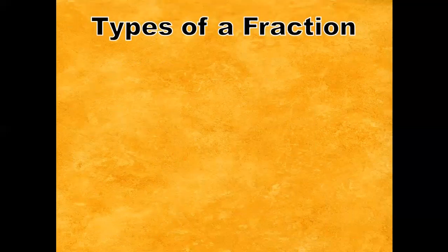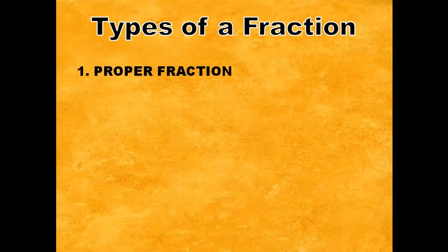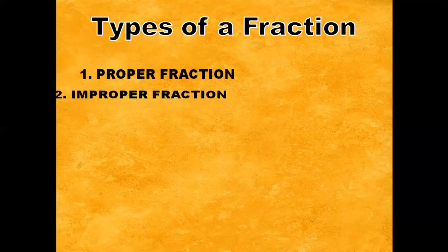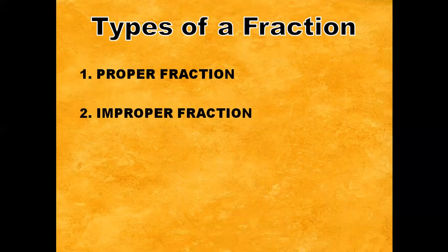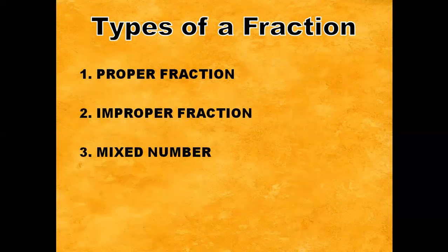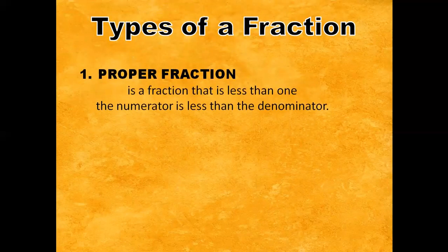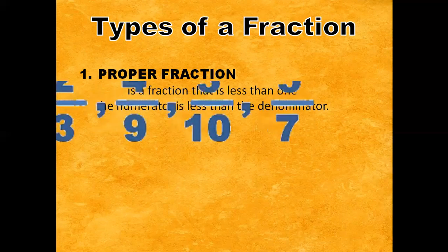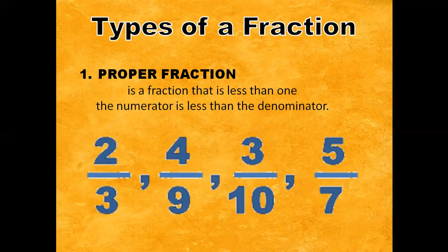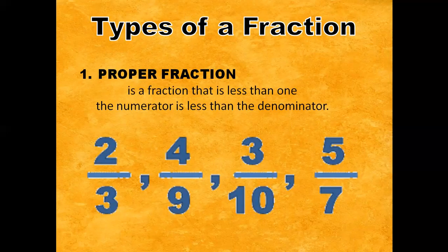Now, what are the types of a fraction? First, we have proper fraction. Second, we have improper fraction. And third, we have mixed number. Proper fraction is a fraction that is less than one — the numerator is less than the denominator. For example, we have two-thirds, four-ninths, three-tenths, and five-sevenths. The numerator is two, four, three, and five, and the numerator is less than the denominator.